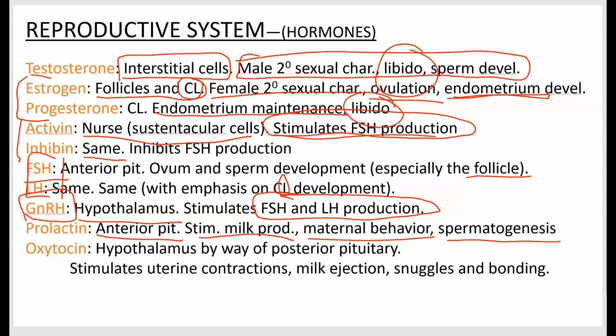Oxytocin is made in the hypothalamus but stored and released by the posterior pituitary. It stimulates uterine contractions and milk ejection — not milk production — and also promotes snuggling and bonding behavior. When you snuggle with somebody, you produce oxytocin, which helps bond you with that individual, even if that individual is your dog and you're petting it.